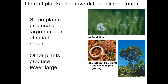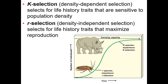We can see these patterns in plants as well as animals. A dandelion will have a whole bunch of seeds without a lot of energy given to each one. Whereas Brazil nuts have a lot of energy in each seed and produce fewer seeds overall.